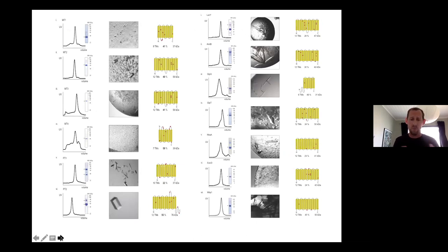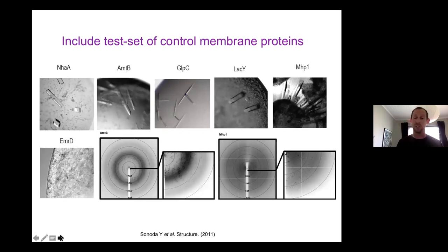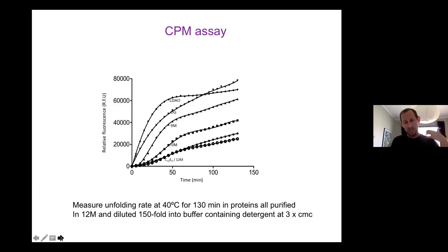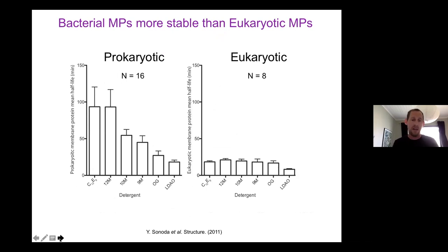We looked at stability in a systematic way, also trying to get our own structures. We got a couple of master students to work on control proteins - crystallizing proteins whose structures were already known. This was very informative for us to understand and compare to our own samples what we needed. We measured unfolding rates by heating at one temperature and looking at unfolding over a given time period. From the exponential decay we could look at the relative unfolding rate of our protein in different detergents.